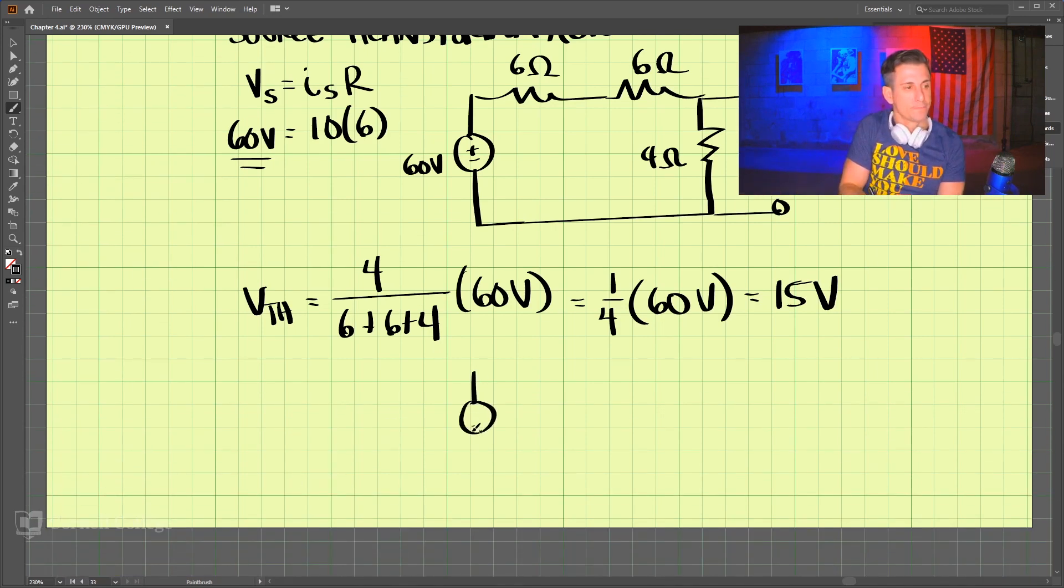And so we can draw this again of the Thevenin equivalent between these two terminals. We have our Thevenin resistance, which is 3 ohms, and our voltage source of 15 volts. And that is the solution to 445.